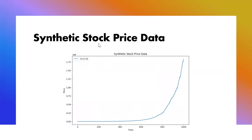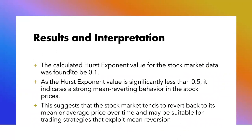Here are the results of the synthetic stock price data generated. The Hurst Exponent obtained is 0.1, which is close to zero, indicating mean reversion in our data. This value is significantly less than 0.5, indicating strong mean-reverting behavior in the stock prices. This suggests the stock market tends to revert back to its mean or average price over time, and may be suitable for trading strategies that exploit mean reversion. At both high and low Hurst Exponent values, we can develop strategies to gain benefits from the market.